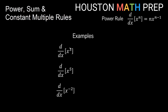Let's do a few examples. The derivative with respect to x of x cubed: the three comes out and multiplies on the outside, then we subtract one from the power, so x cubed becomes x squared — giving us 3x squared. For the derivative of x to the fifth, the five comes out front and subtracting one from the power gives us x to the fourth: 5x to the fourth.